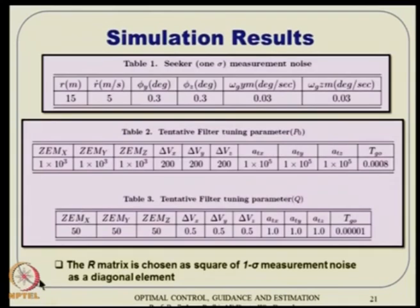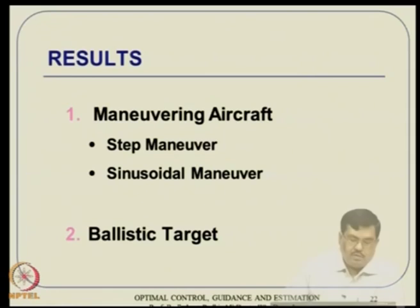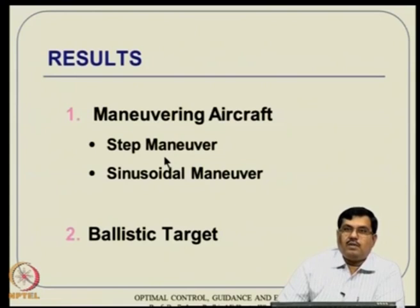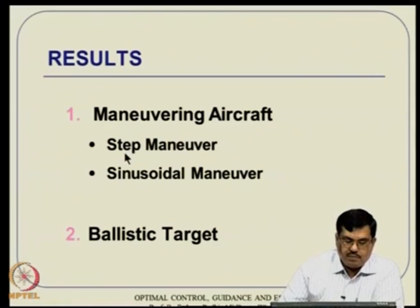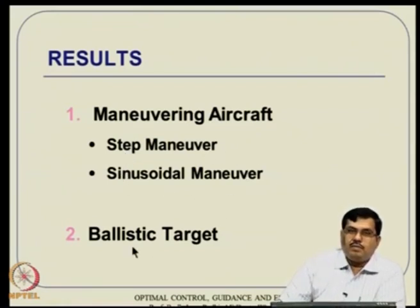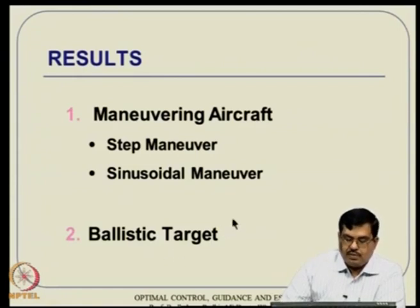The inner loop generates fin deflection commands delta 1 to delta 4, passed through rate and position limits, then through second-order actuator dynamics in simulation. The realized deflections are fed to the system dynamics. Results are shown for three cases: a step maneuver target with a surprise maneuver near the end, a sinusoidal maneuver target, and a ballistic target. The final Tgo available is 4 seconds, with the target applying 3g commands between 2 to 4 seconds and reversing direction in the last 2 seconds.